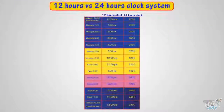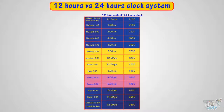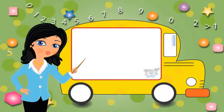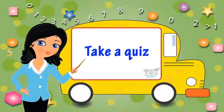So kids, today we learned the two types of clock systems: the 12-hour clock system and the 24-hour clock system. We also tried to understand the relation between the 12-hour and 24-hour clock systems. Okay kids, now you may go ahead and take a quiz to learn more. Bye-bye!